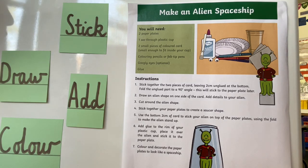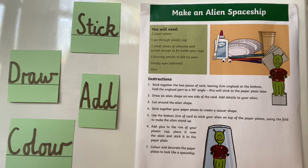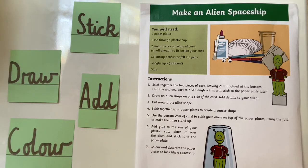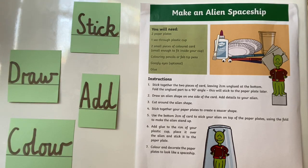What do you notice about where the imperative verb comes in the sentence? That's right — all of my words start with a capital letter because they are at the beginning of each sentence. Number one: stick. Number two: draw. Number three: cut. Number four: stick. Number five: use. Number six: add. And number seven: colour. Pause the video and can you come up with any other imperative verbs that we might need in an instruction?